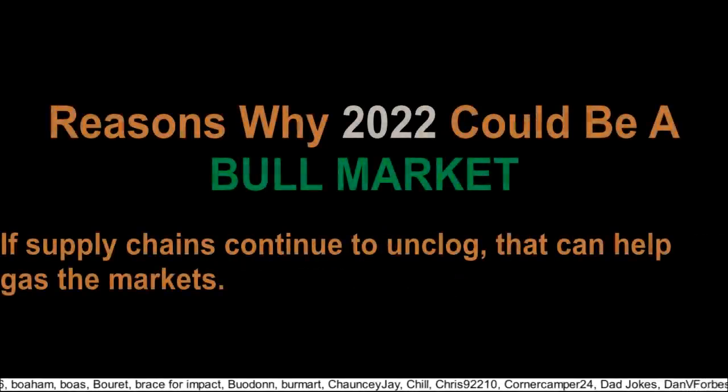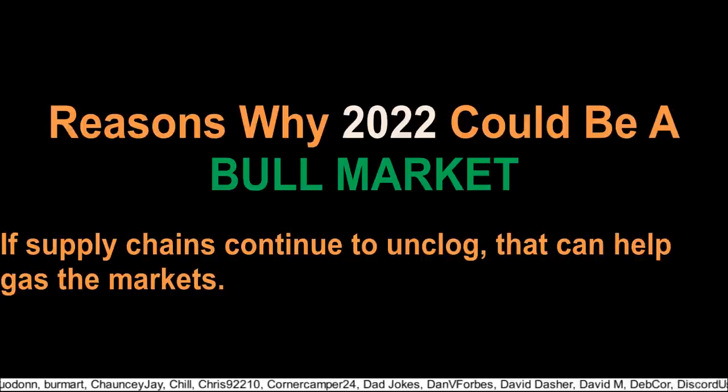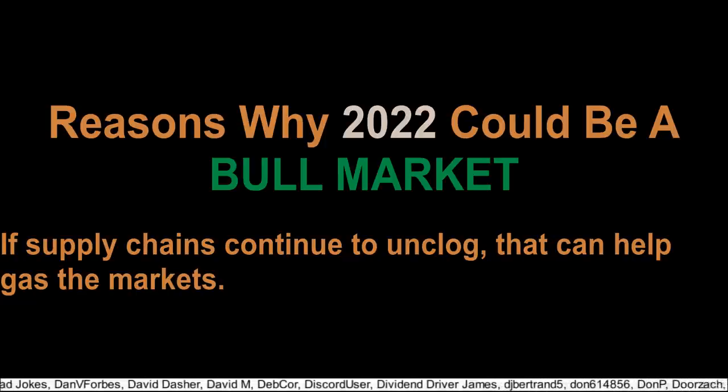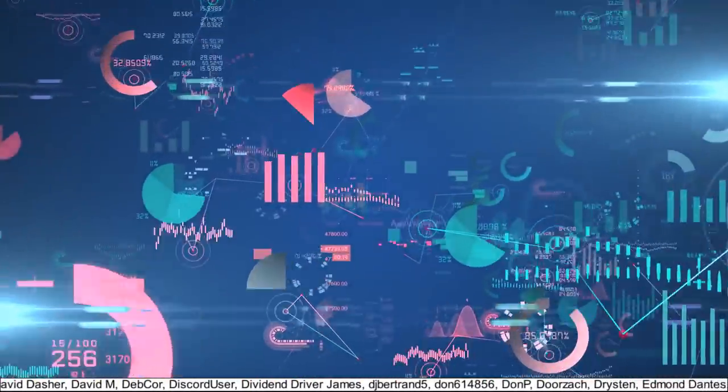Why else could 2022 be a bull year? Well, supply chains have been slowly unclogging, which again allows the economic machine to get going faster. The faster supply chains get unplugged, the better most businesses do that have been constrained due to lack of computer chips or parts or whatever. All of that should help accelerate business results, which could be why 2022 ends up being a bull year. Okay, moving on, let's look at some indicators that people use to predict what will happen in the markets.